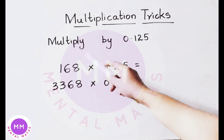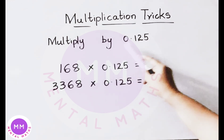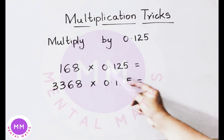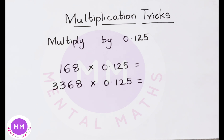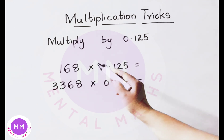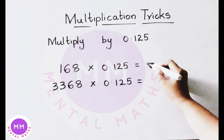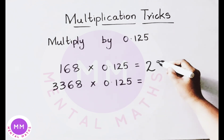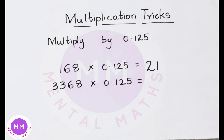The first trick: how to multiply a number by 0.125 quickly. See the example: 168 multiplied by 0.125. Divide the given number by 8 to get the result. 8 goes into 16 two times, then 8 into 8 once. So the answer is 21.